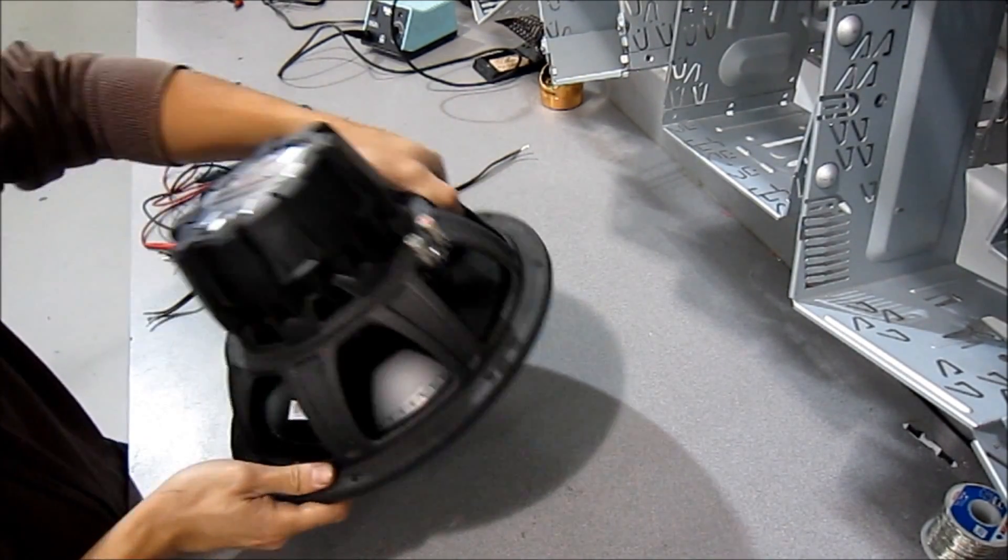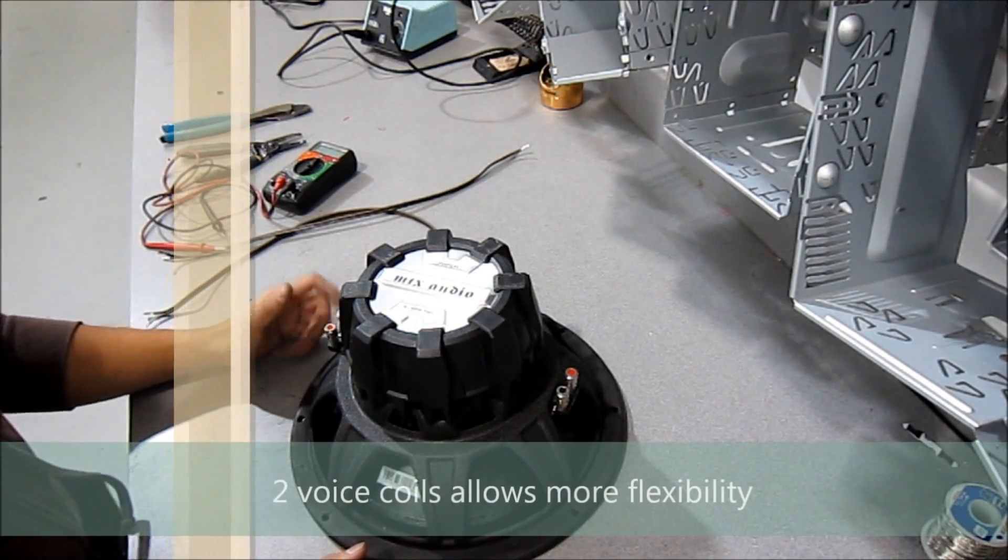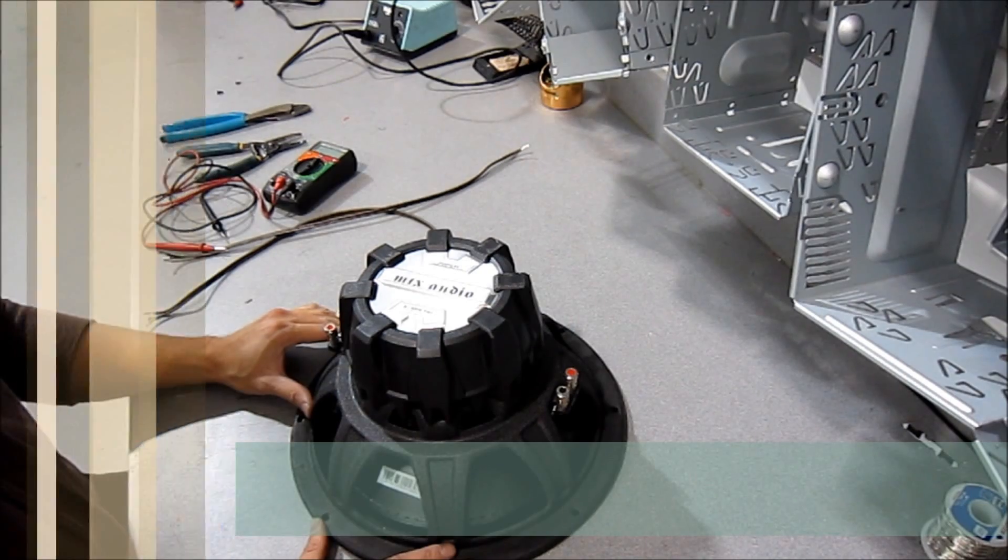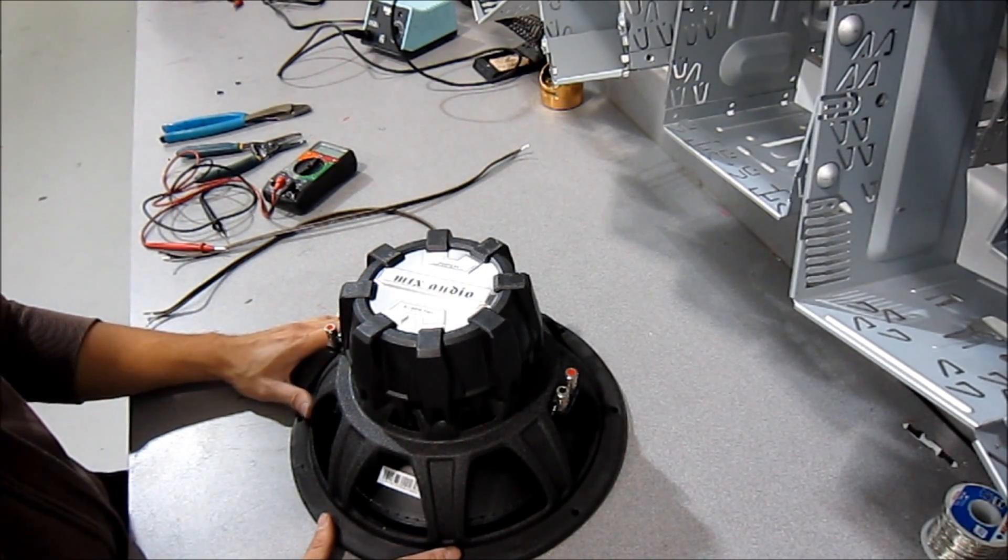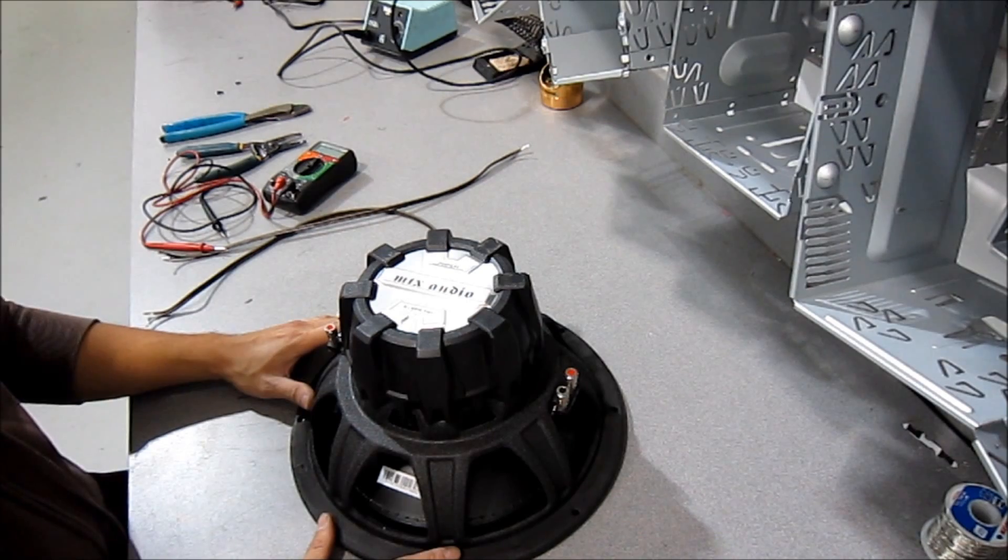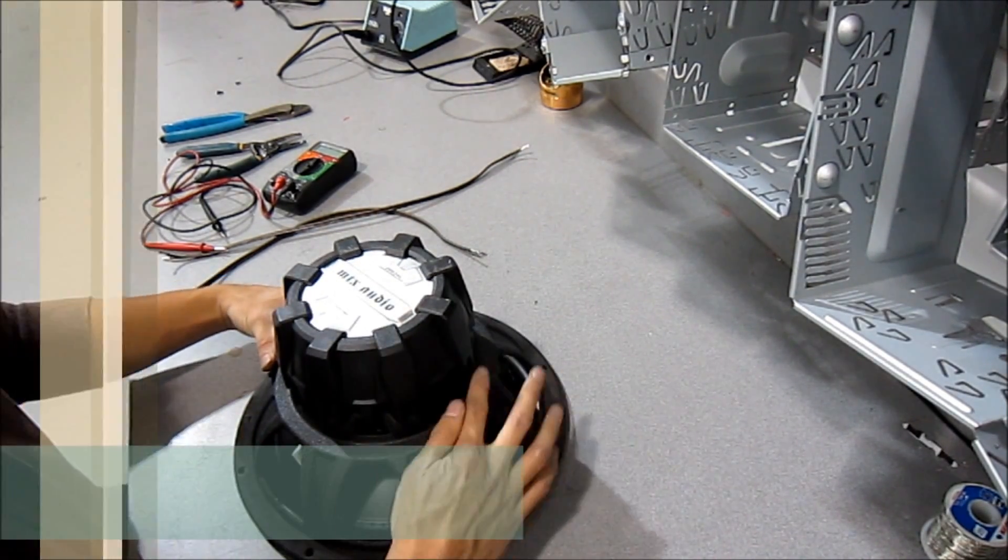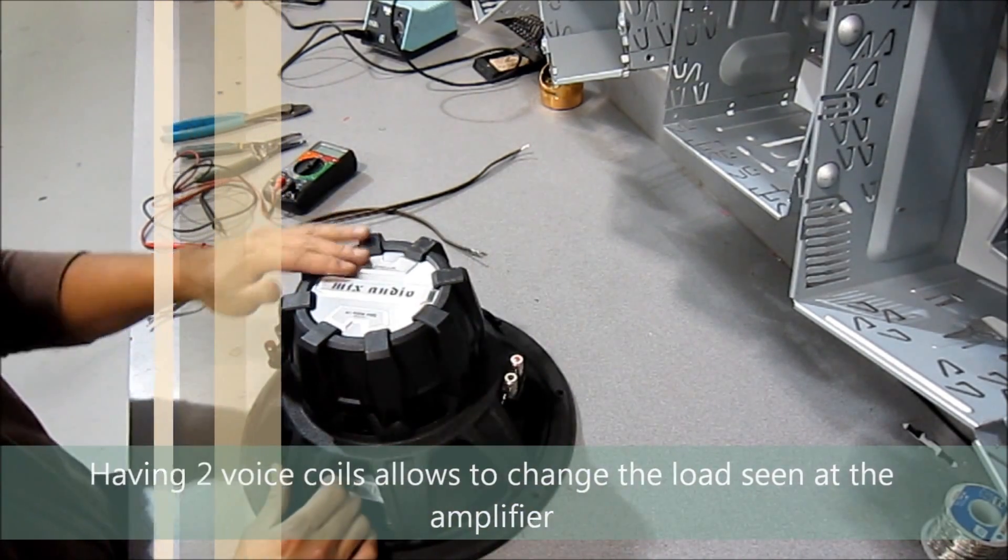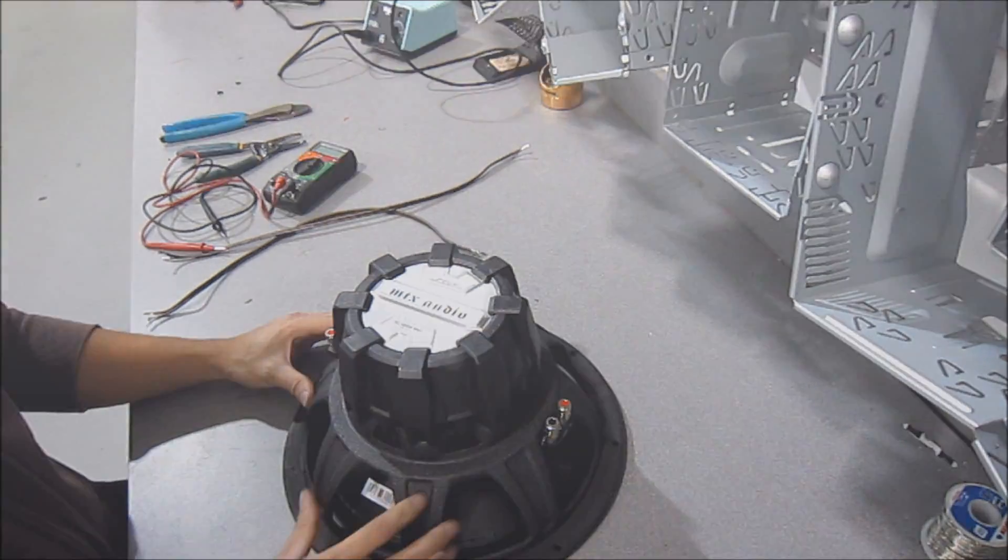So the whole thing about a dual voice coil subwoofer is its flexibility. Now, a lot of people think that it's louder just because it has two voice coils. It is, but not because it has two voice coils. It's because the two voice coils make it a much more flexible subwoofer in terms of wiring to extract the most amount of power out of your amplifier. So as you can see here, I have one set of terminals over here and I have another set over here. So today I'm going to show you how to wire it up for different impedances to maximize the amount of power you extract from your amplifier.